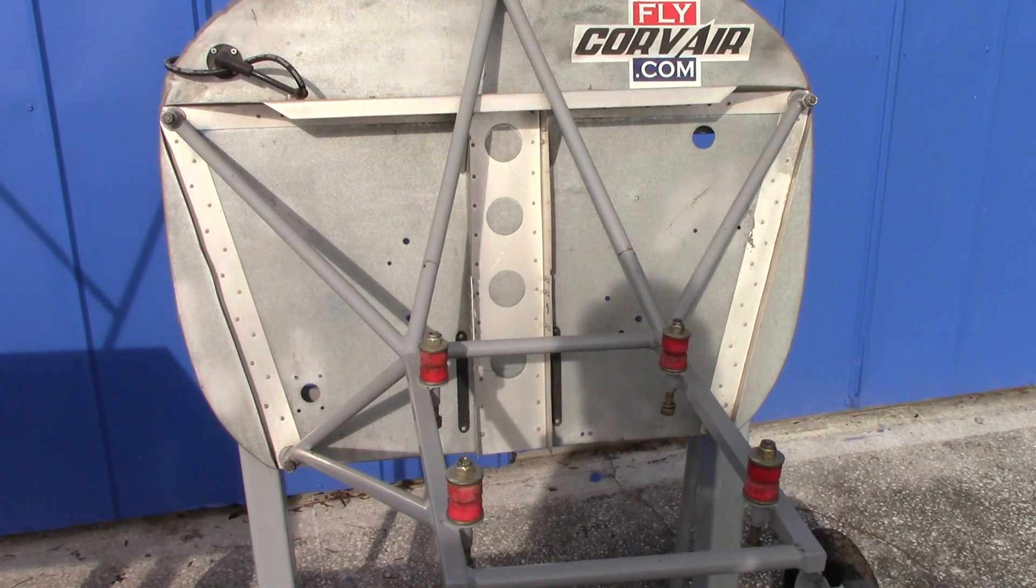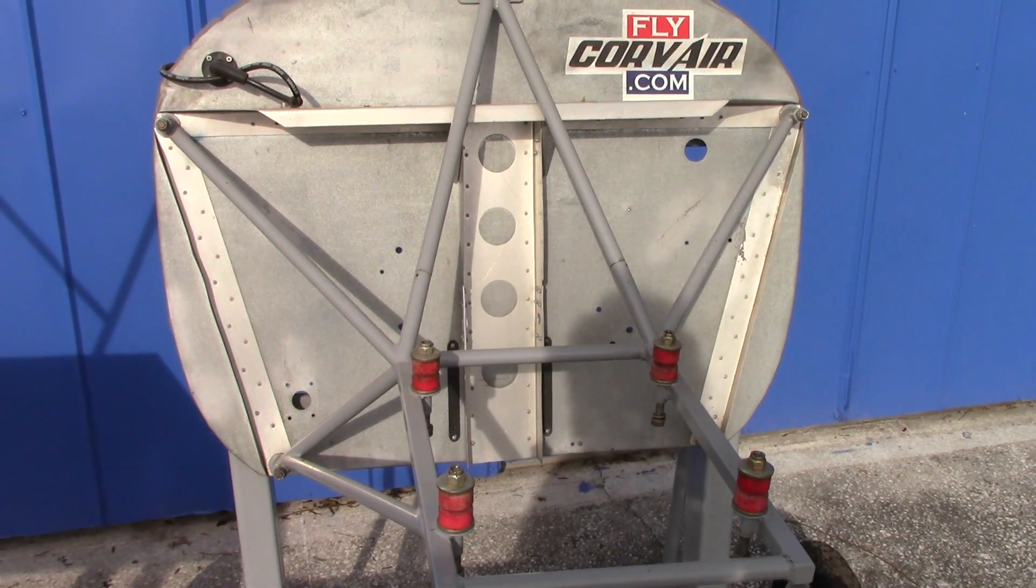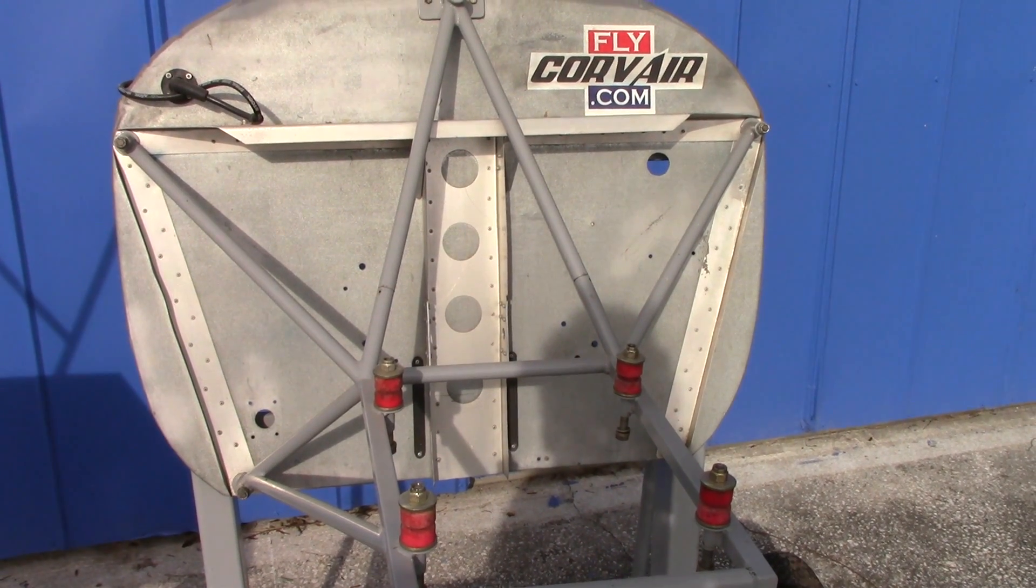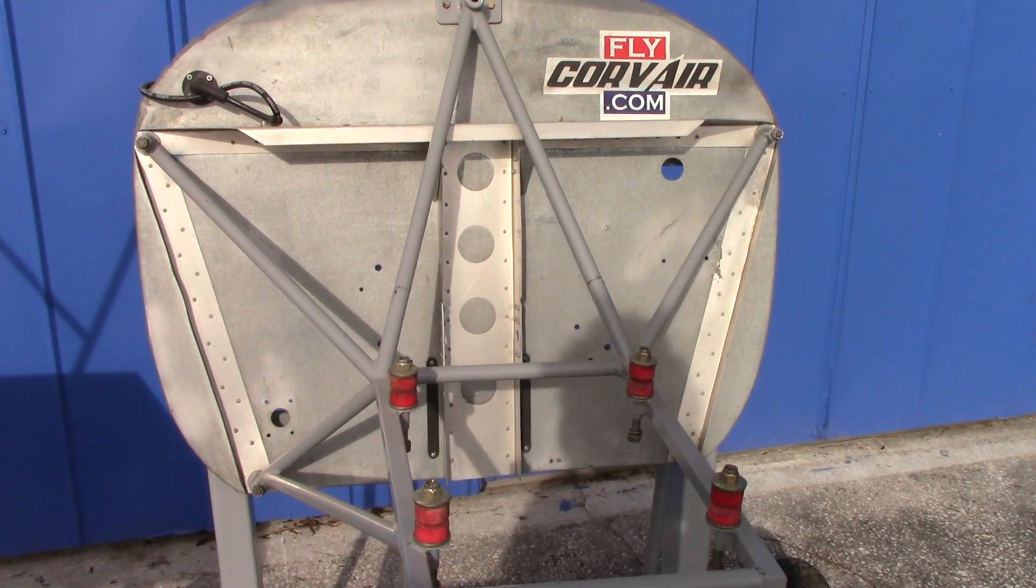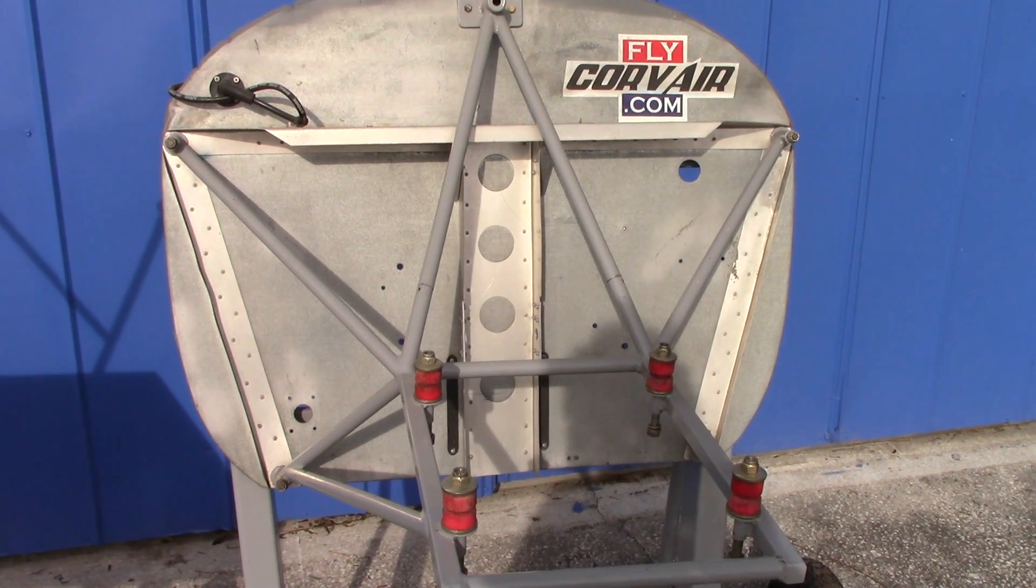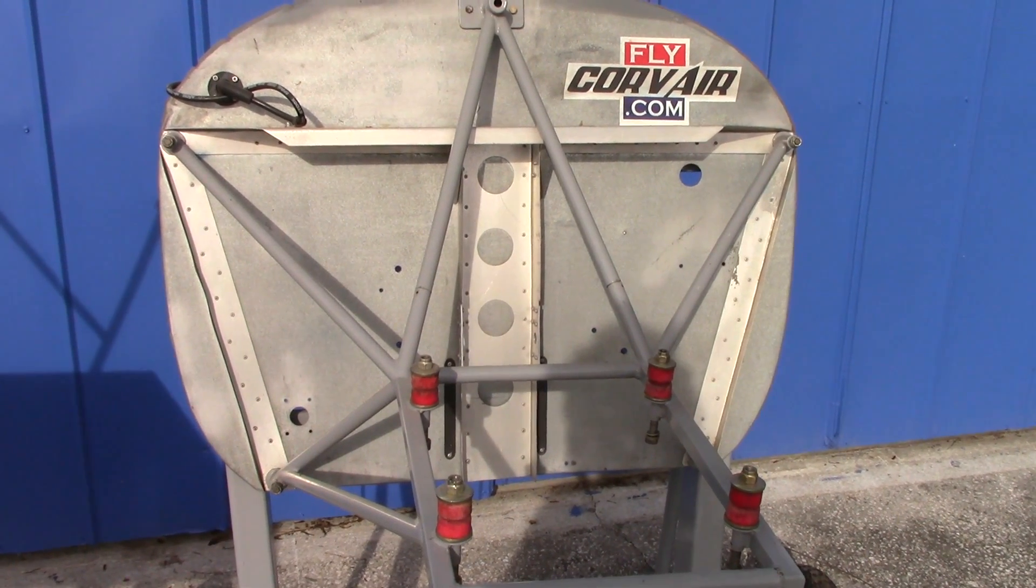Today we take a look at two motor mounts. This is a Flycorvair mount, actually a display mount, not even a regular production mount. It's just the one that we use on display stands at Oshkosh. This is for a Zenith 750 and I want to show you something.